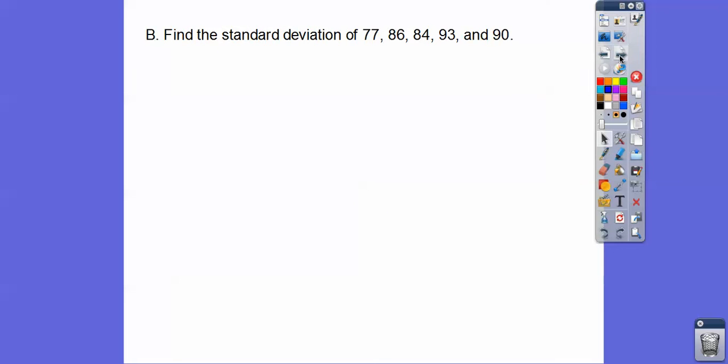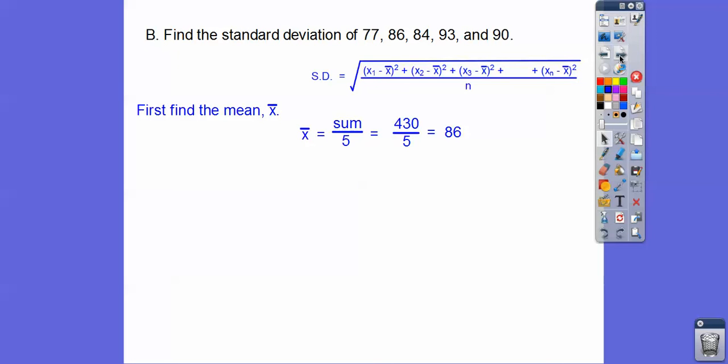So anyway, we're just calculating the standard deviation. So let's find the standard deviation of these numbers. So first we've got to find the mean. So the mean is going to be the sum divided by the number of numbers.